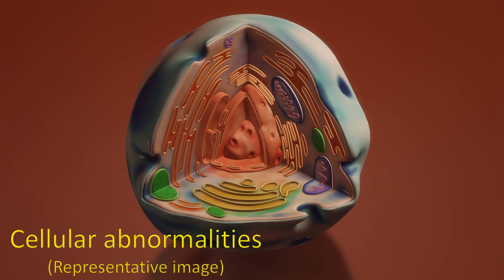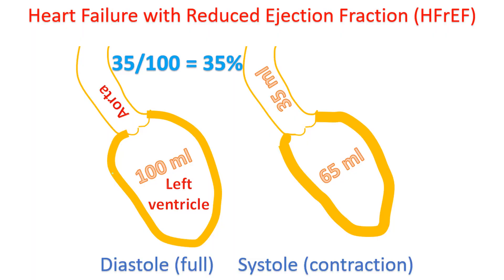Along with this, there is abnormal coronary microcirculation, sympathetic activation, and activation of the renin-angiotensin-aldosterone axis. These result in oxidative stress, fibrosis, and hypertrophy.